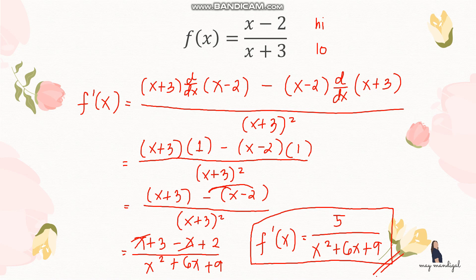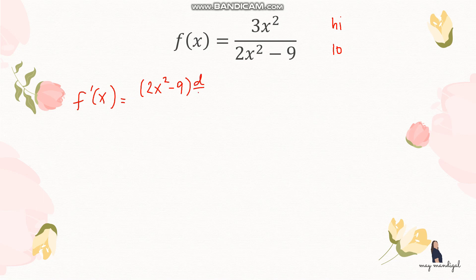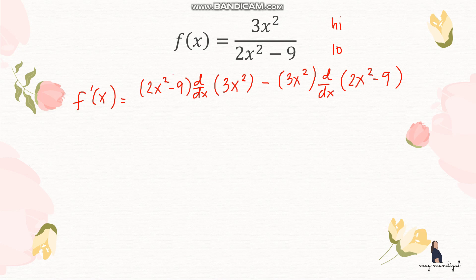That is how you use the quotient rule when you have two terms being divided — just follow low d-high minus high d-low all over low squared. For the next example, let f(x) = 3x squared over (2x squared minus 9). Here, 3x squared is the high and 2x squared minus 9 is the low.